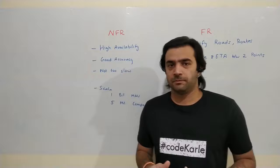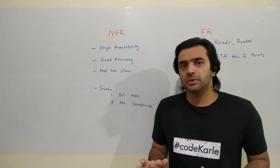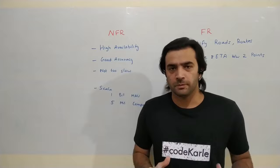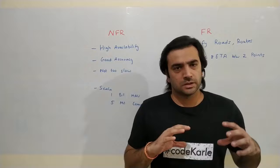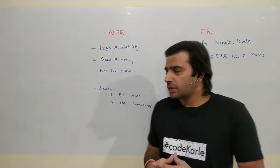Coming to non-functional requirements: first, this system should always be available — it should not go down. Next, it should have good enough accuracy; giving a good route, even if not the very best, is okay as long as it's not terrible. It should not be too slow — one, two, or three seconds to do all calculations is acceptable, but it should not take 15 seconds to come back with a response.